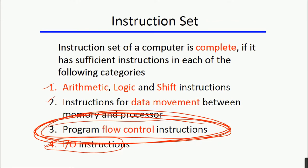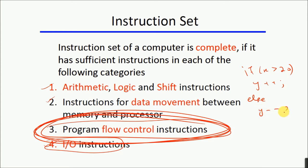What are program flow control instructions? The program is a set of instructions placed inside memory, fetched one by one with an incrementing address provided by the program counter. The program counter keeps incrementing after every instruction — first, second, third, fourth — each time just the next instruction is fetched and executed. But what if we want to change the flow of program? For example in C language: if x is greater than 20, y++; else y--.